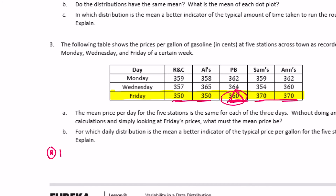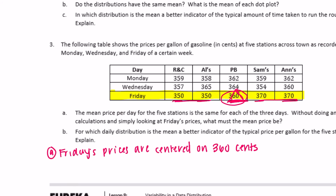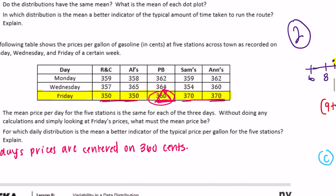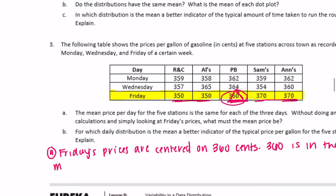Friday's prices are centered on 360 cents. 360 is in the middle of 350 and 370, so 360 is the mean.